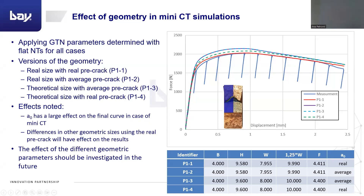To show these effects, the results are shown in this diagram for four cases. In the first case, the real geometry and realistic pre-cracking were used — this version is going together with the measurements. However, in the second case, the real geometry size was kept, but instead of the real crack size, an average version was used, which is very widely used in normal CT specimens. But in the case of miniaturized specimens, it can be seen that it overestimates the results. This is the same as the third case where the theoretical size was used, first determined from the drawing of the CT specimens — it also goes together with the real size version where the average crack was used.